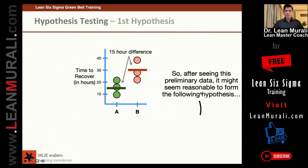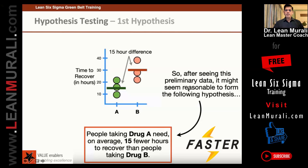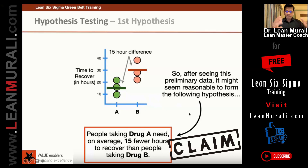After seeing this preliminary data, it might be reasonable to make this claim: people taking drug A need on average 15 fewer hours to recover than people taking drug B. That is, if you take drug A, you would recover at least 15 hours faster than if you take drug B. This is called a claim that you are making based on the data, and this claim is called a hypothesis.